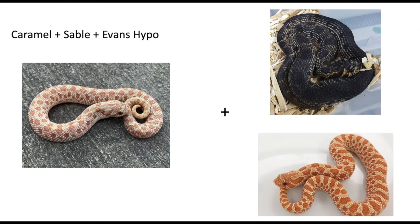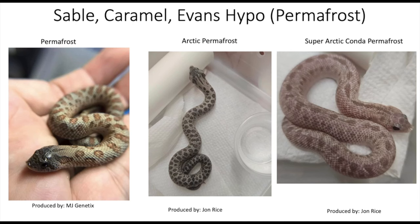Now we're going to do another combination: caramel sable Evans hypo, and this is the Permafrost — I've had this in other videos. We have the permafrost, the arctic permafrost, and a super arctic anaconda permafrost. Definitely one of the coolest combinations out there, and I'm hoping in 2024 we start seeing more of these up for sale in the market.